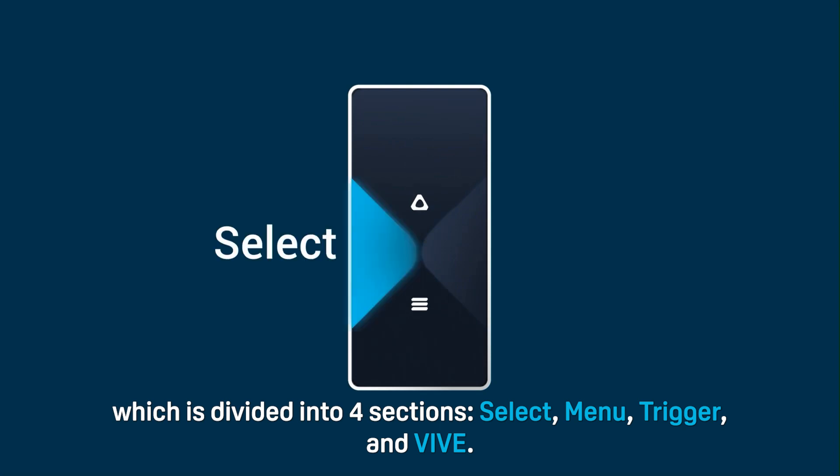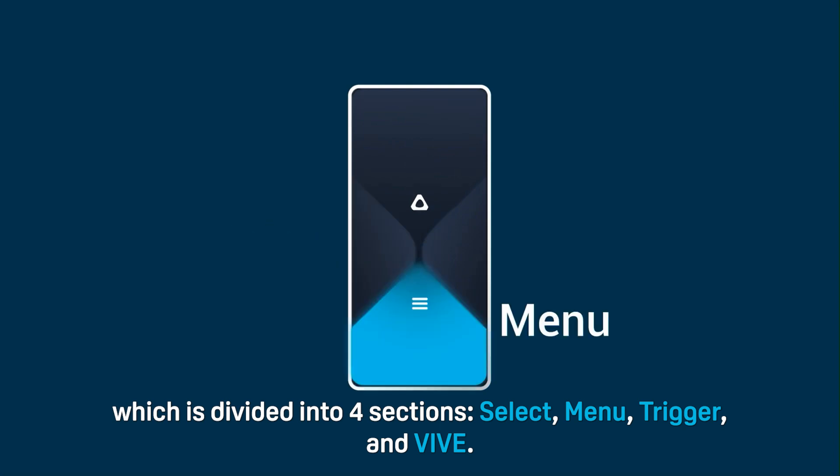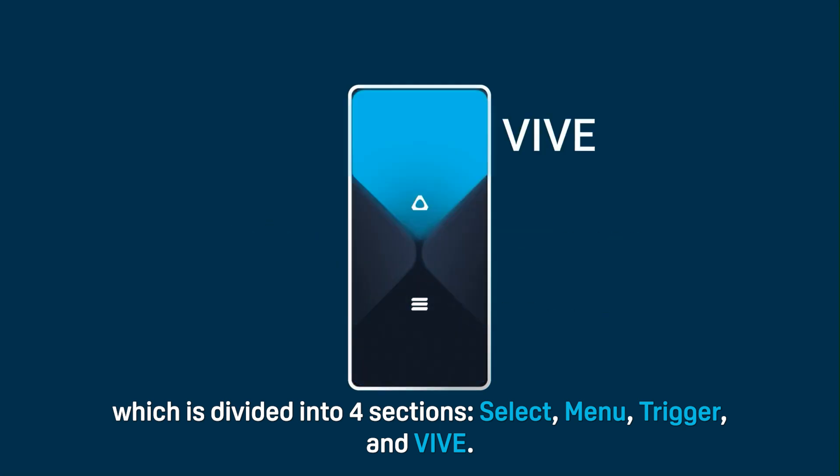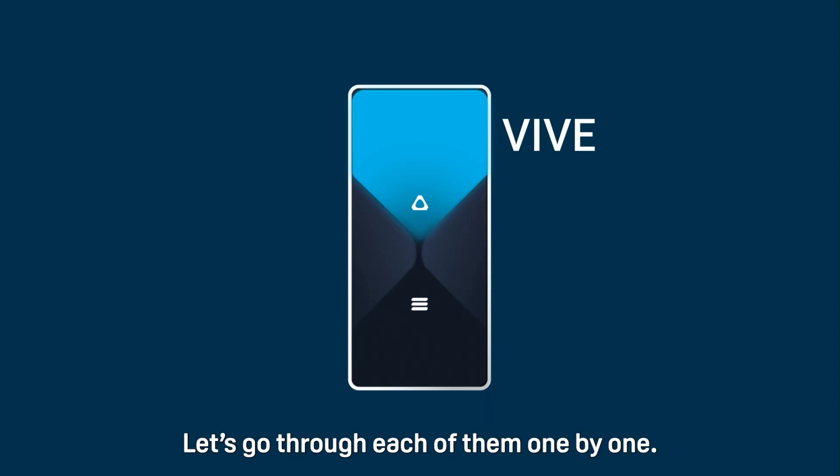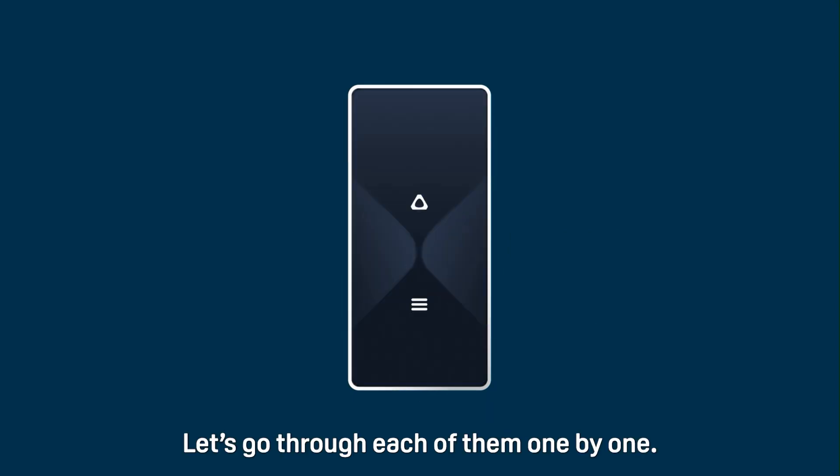The four sections are: Select, Menu, Trigger, and VIVE. Let's go through each of them one by one.